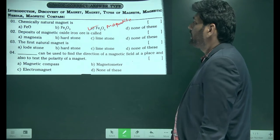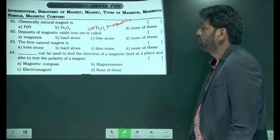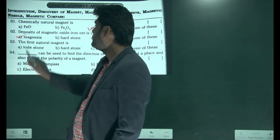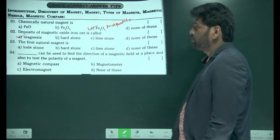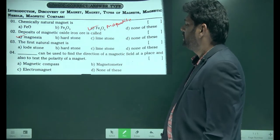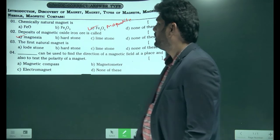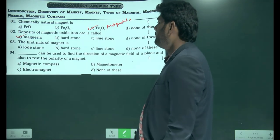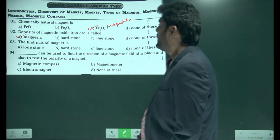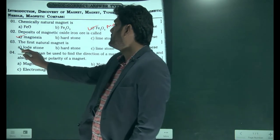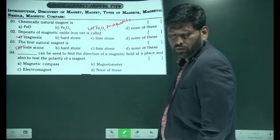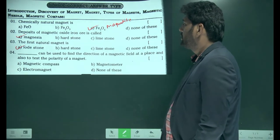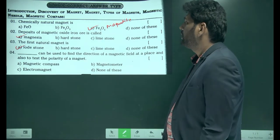Deposit of magnetic oxide on iron ore is known as magnetite. The first natural magnetism — what is the first magnetic material? It is nothing but loadstone. Loadstone is the first magnetic material, so option A is correct.